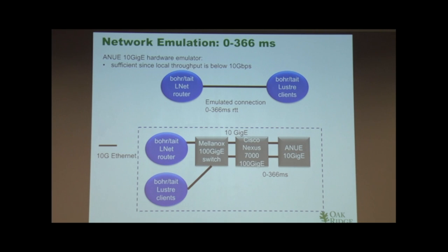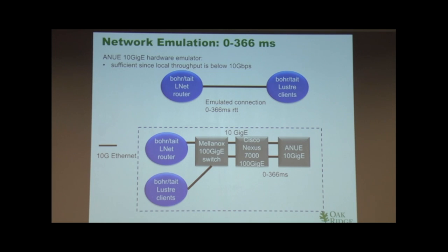To go to longer and longer distances, we have a hardware emulation testbed at Oak Ridge with devices that delay packets based on RTT and deliver them, emulating hardware delivery. You can emulate from 0 to 366 milliseconds — they can actually go up to 800 milliseconds, essentially a couple of satellite hops. I only used 0 to 366, which covers around-the-Earth connections. The configuration has the LNet router plugged into the switch, then into the emulator, so the RTT can be anywhere from 0 to 366.